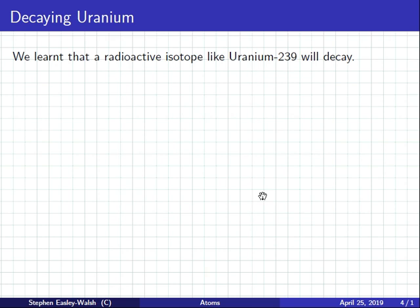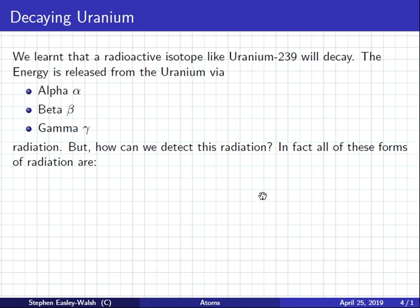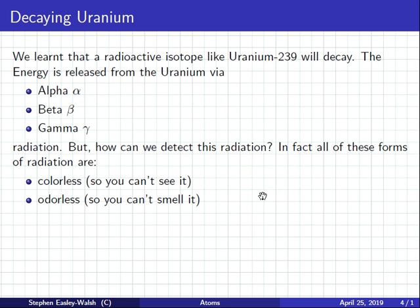So, we learned that a radioactive isotope like uranium will decay. The energy is released via alpha, beta and gamma. But, how can we detect this radiation? How can we measure this radiation? In fact, we have a problem. Alpha, beta and gamma are colorless. That means no color. So, you can't see it. It's odorless. What does that mean? Smell it. Can't smell it.